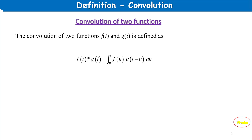First, the definition of convolution of two functions. The convolution of two functions f and g is defined as f(t) * g(t) = integral from 0 to t of f(u) · g(t − u) du.